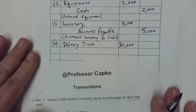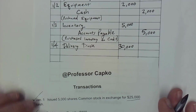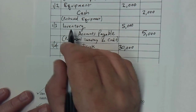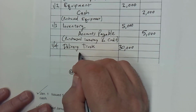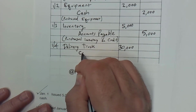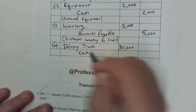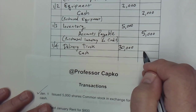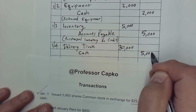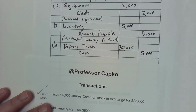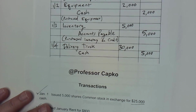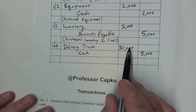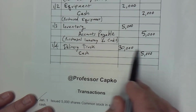That's an asset. I'm going to credit cash. So I'm going to indent here and credit cash. And we paid $5,000 down.